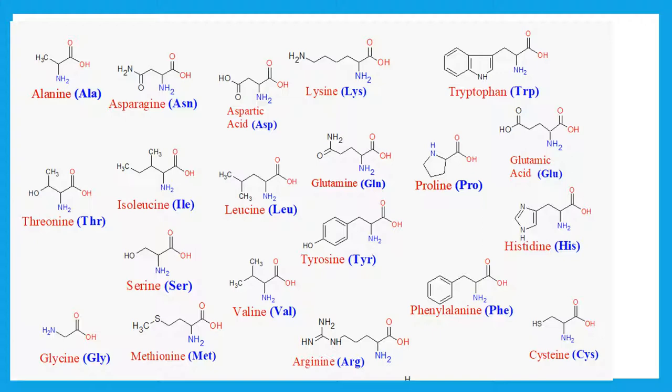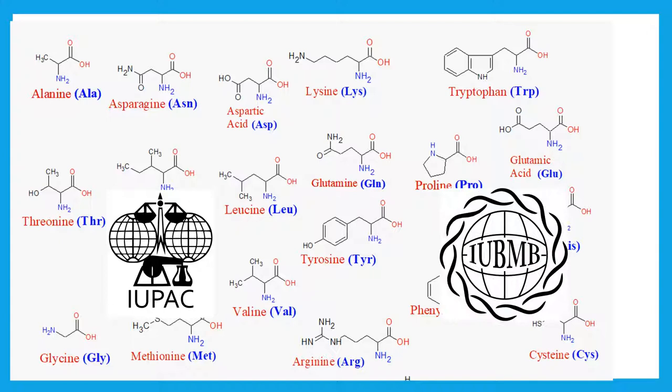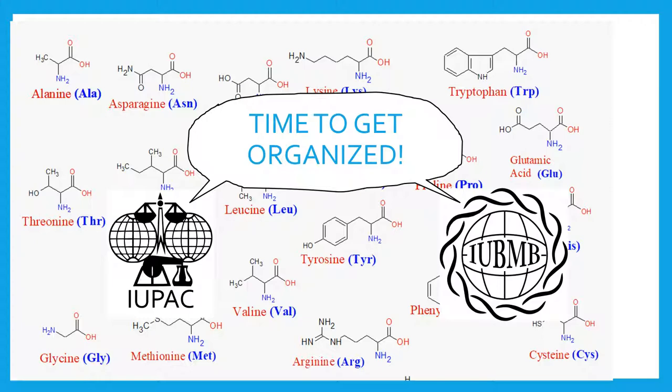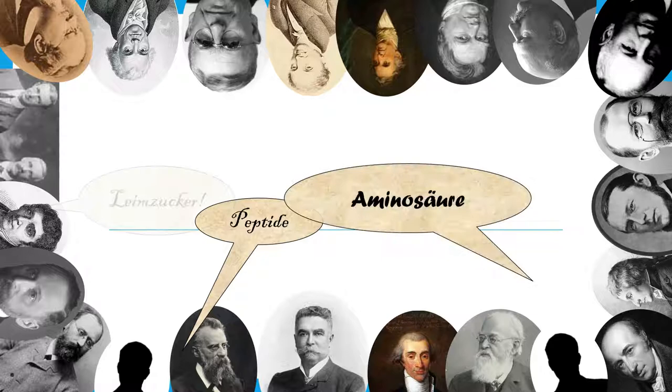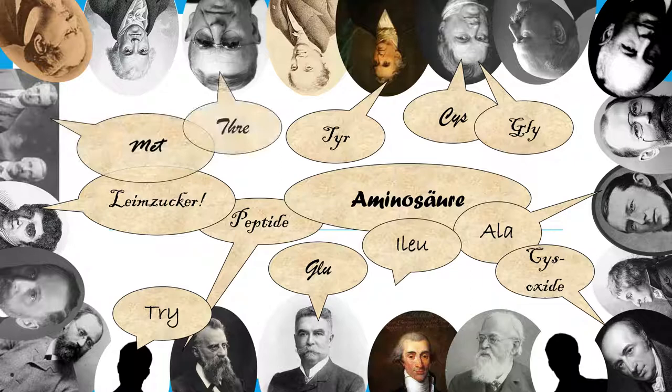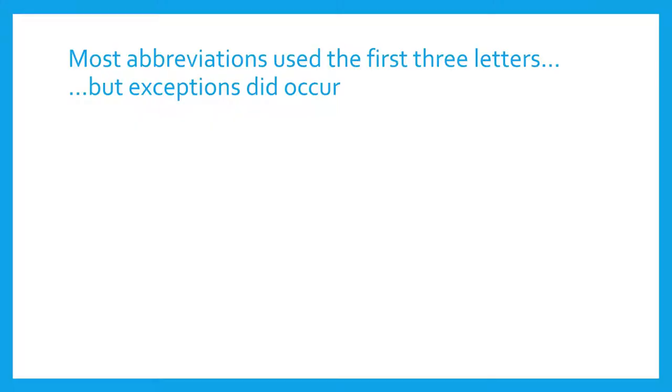In 1984, the International Union of Pure and Applied Chemistry and the International Union of Biochemistry held a joint commission to standardize the abbreviations of amino acids into a three-letter format. In the past, scientists had arbitrarily shortened amino acid names for ease of writing. Generally, amino acids were written using the first three letters of their names, but there were still irregularities.